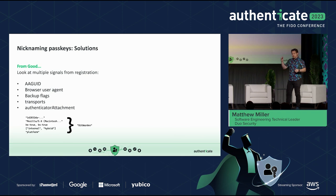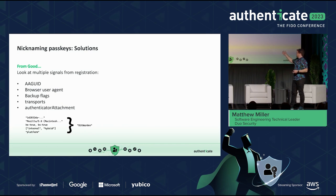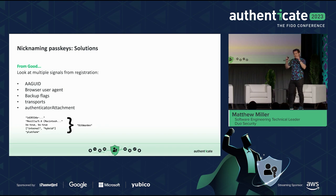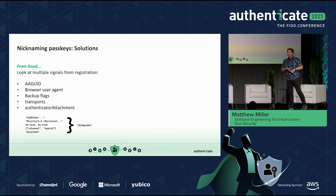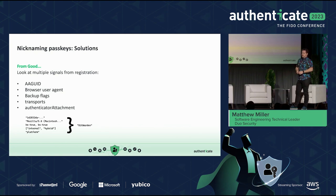When you have an AAGUID value, there's now a list of providers where you can do a simple lookup and identify the provider — for example, you look it up and it says 'Bitwarden.' So when a user registers their credential, in their control panel you can display 'Bitwarden,' and for most users that's enough for them to remember they can sign in with Bitwarden. When you don't have that value, you have to build heuristics based on things like browser user agent, backup flags, transports, and authenticator attachment — piecing these signals together to get a decent nickname for the credential in lieu of the AAGUID.